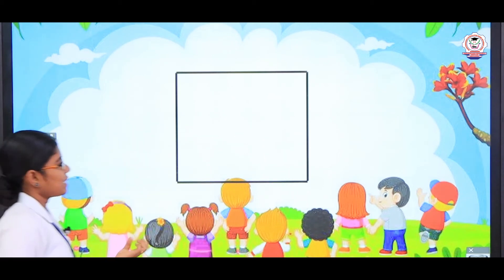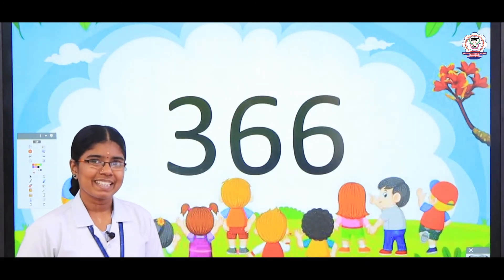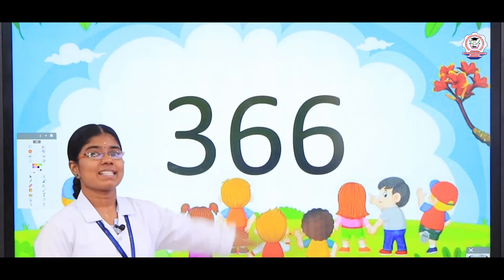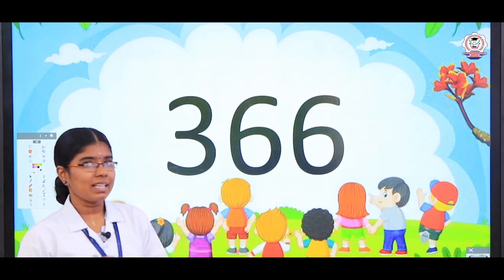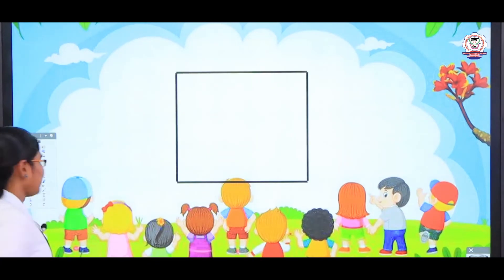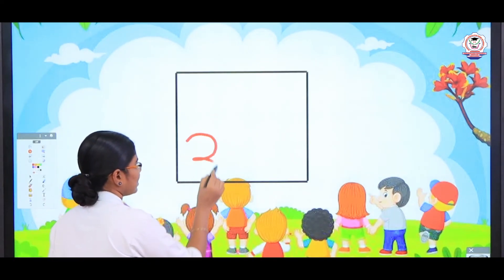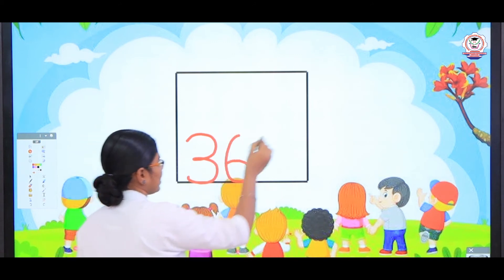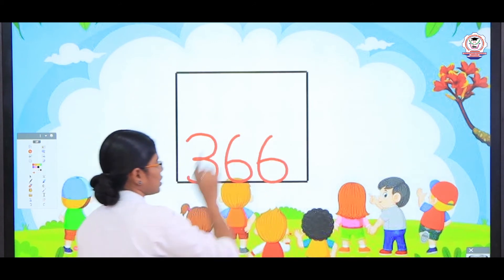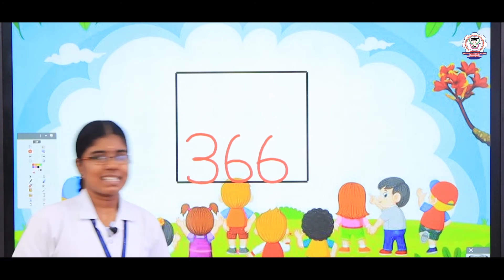The next number is — what number is this? Yes, 3, 6, 6 — 366. Shall we write this number? Yes children, look here. 3, 6, again 6. So 3, 6, 6 — 366.